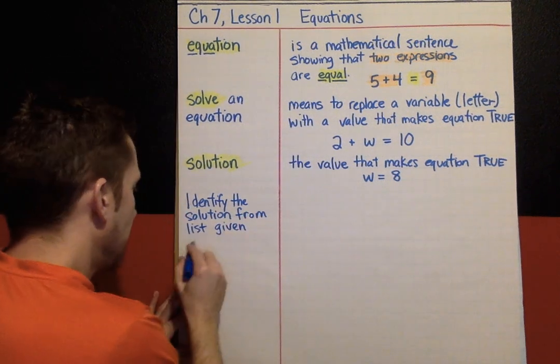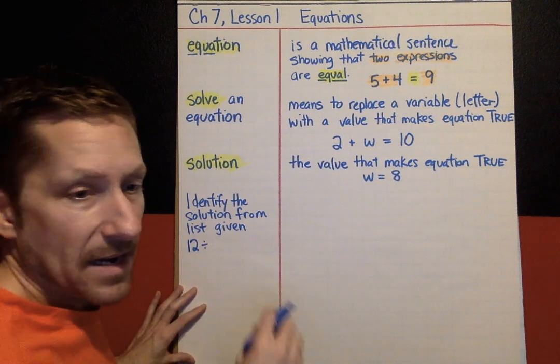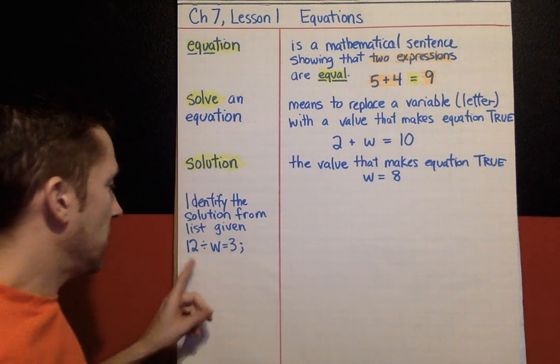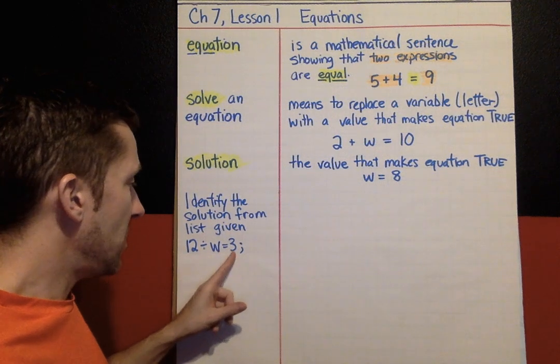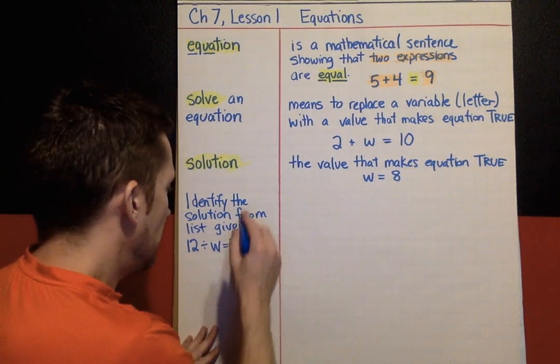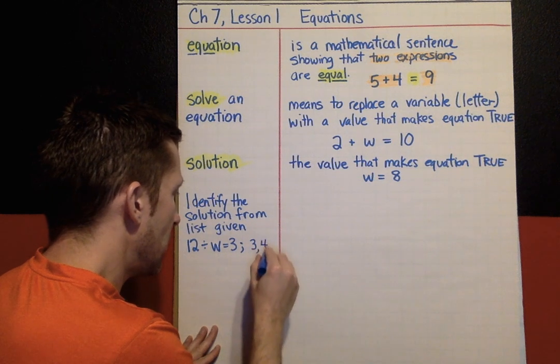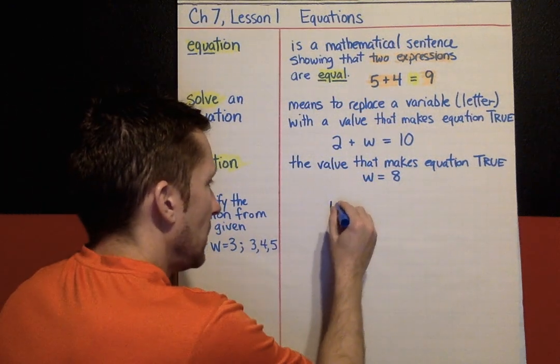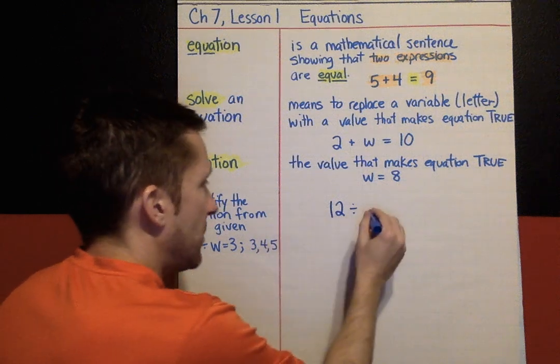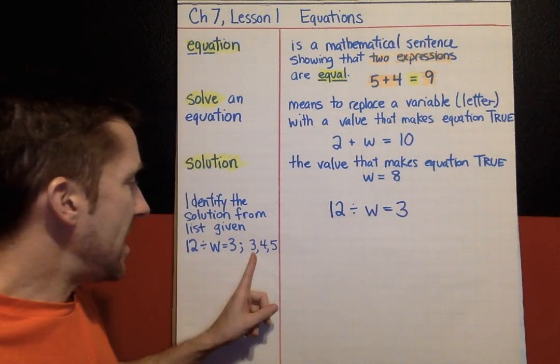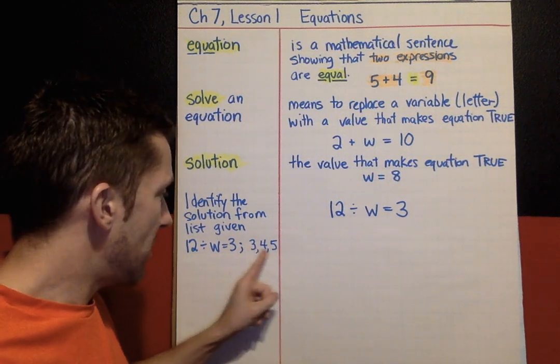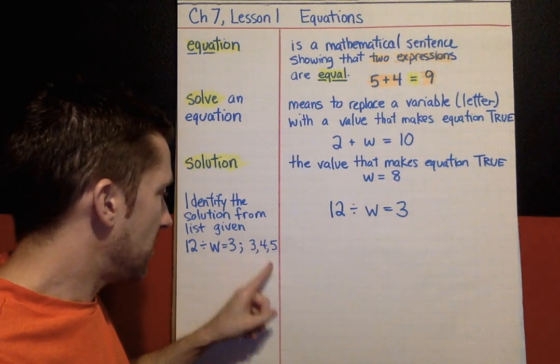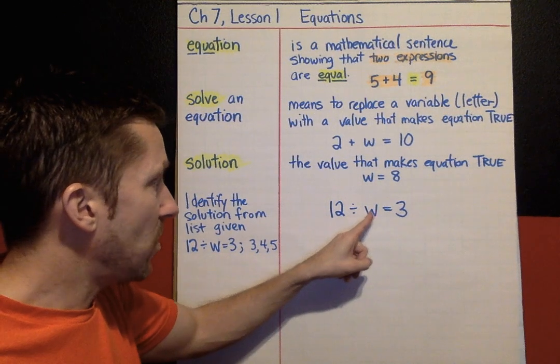Identify the solution from the list given. Here's an example. 12 divided by w equals 3. So, there's our equation. And the possible choices are 3, 4, and 5. To solve this, I'm going to write down the equation. 12 divided by w equals 3. And then, I can just test each possible number in the list. Plug in 3. 12 divided by 3 is not 3. So, that one's no, I'm not going to pick 3. Put in 4. 12 divided by 4 equals 3.